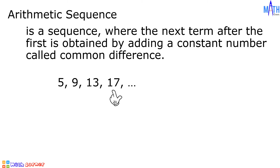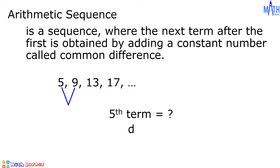Let us determine the fifth term of this arithmetic sequence. To determine the fifth term, we will add the common difference to the fourth term. To determine the common difference, we will subtract any two consecutive terms. The common difference is denoted by a small letter d. 9 minus 5 is equal to 4. 13 minus 9 is equal to 4. 17 minus 13 is also equal to 4.